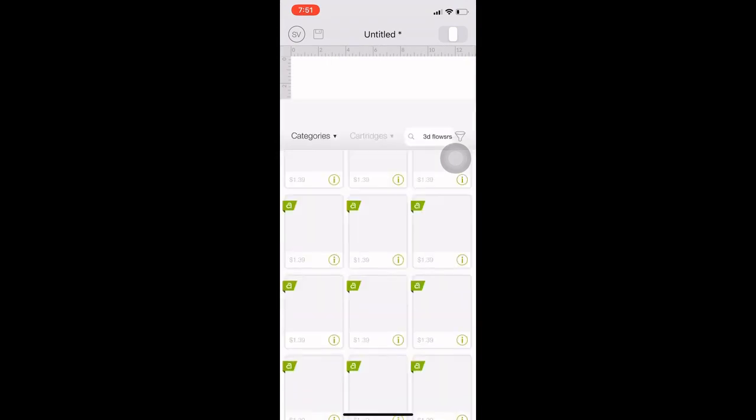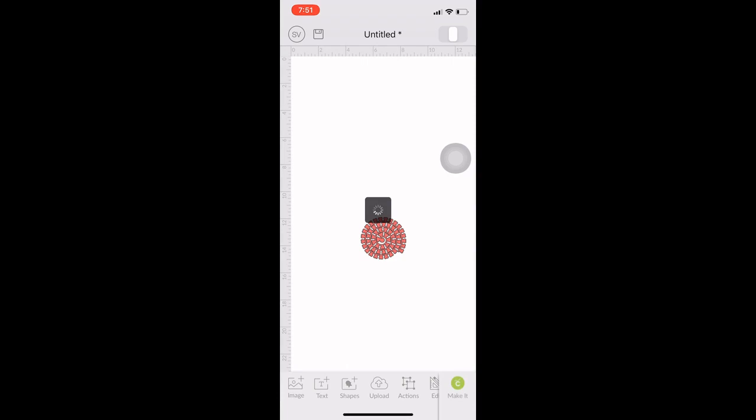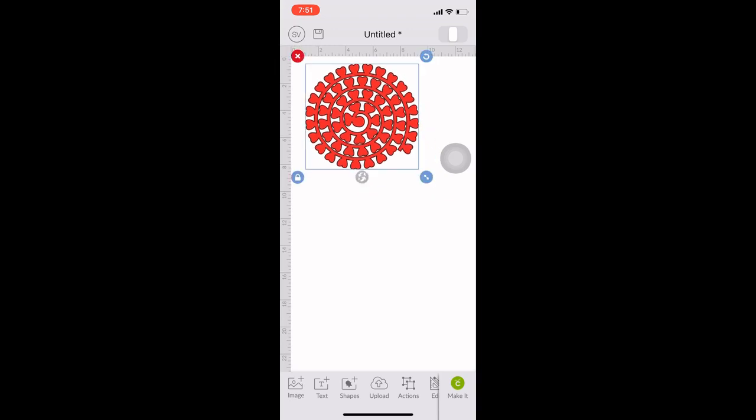So first let's open up the Cricut app and this is our canvas. So we have to add our desired flower image for the machine to cut. So I selected this flower here. So our cardstock measures about nine inches in width, so to make a flower of about three to four inches our image on the screen should also be measuring about nine inches on the width.